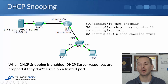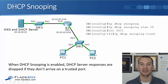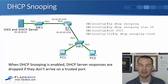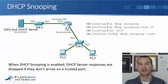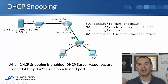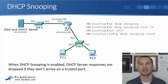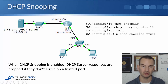From switch 1's point of view, the DHCP offers are going to come in on interface fast 0/1, so that also needs to be configured as a trusted port. A trusted port is a port directly connected to the DHCP server, and also inter-switch links leading down to the PCs. When any DHCP server traffic comes in on a trusted port, the switch will allow that traffic through. But if DHCP server traffic comes in on an untrusted port, the switch will drop it.